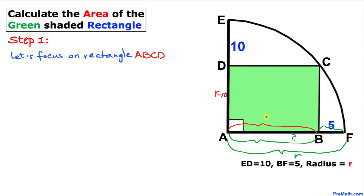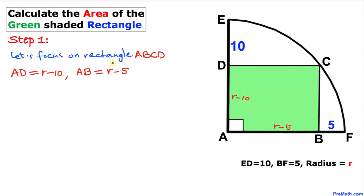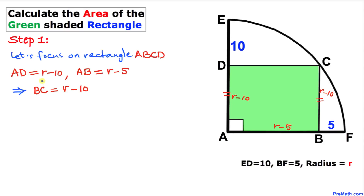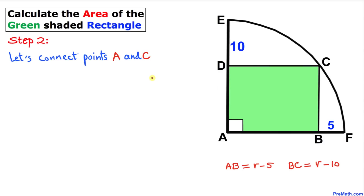Since ABCD is a rectangle — and by definition a rectangle has four angles each measuring 90 degrees, and its opposite sides have the same length and are parallel — the side AD and opposite side BC are the same length. Since AD is R minus 10, BC is R minus 10 as well. Therefore, BC equals R minus 10.